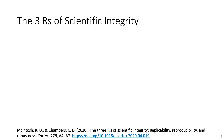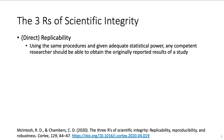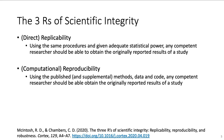McIntosh and Chambers identified three cornerstones of scientific integrity. First, replicability: research is replicable when, using the same procedures and given adequate statistical power, any competent researcher is able to obtain the originally reported results of a study. Second, reproducibility: research is reproducible when, using the published and supplemental methods, data and code, any competent researcher is able to obtain exactly the originally reported results of a study.